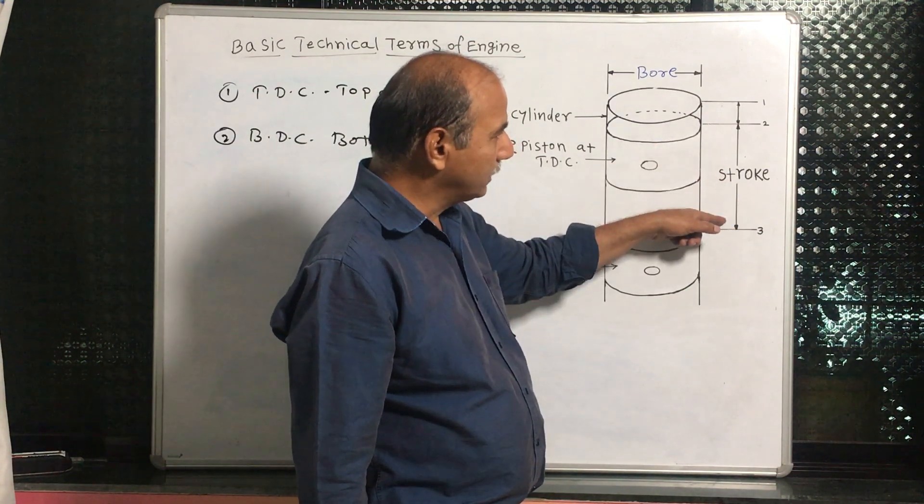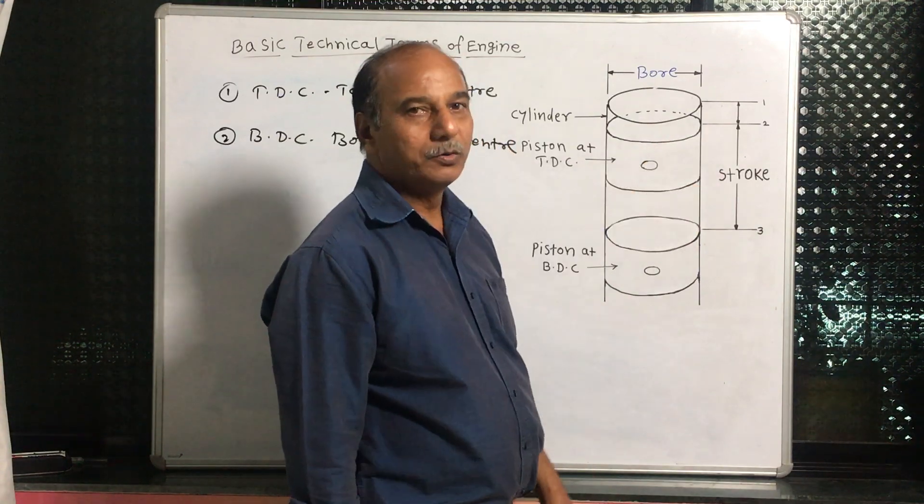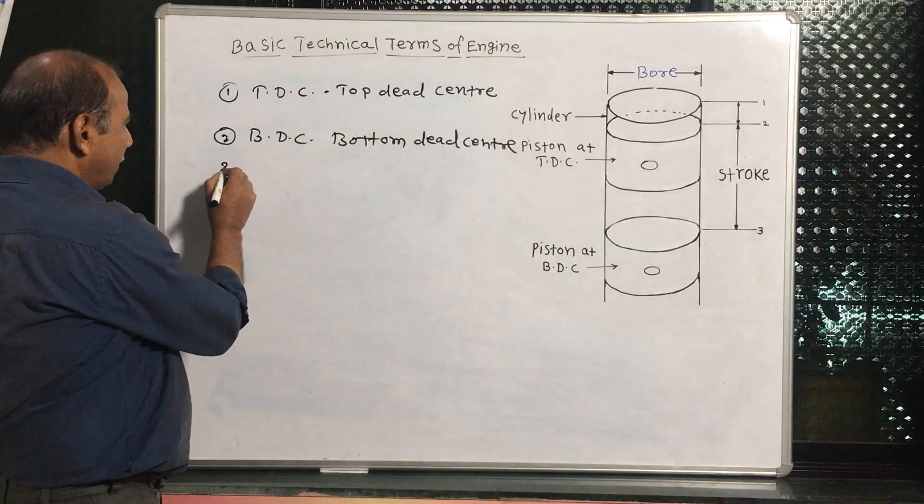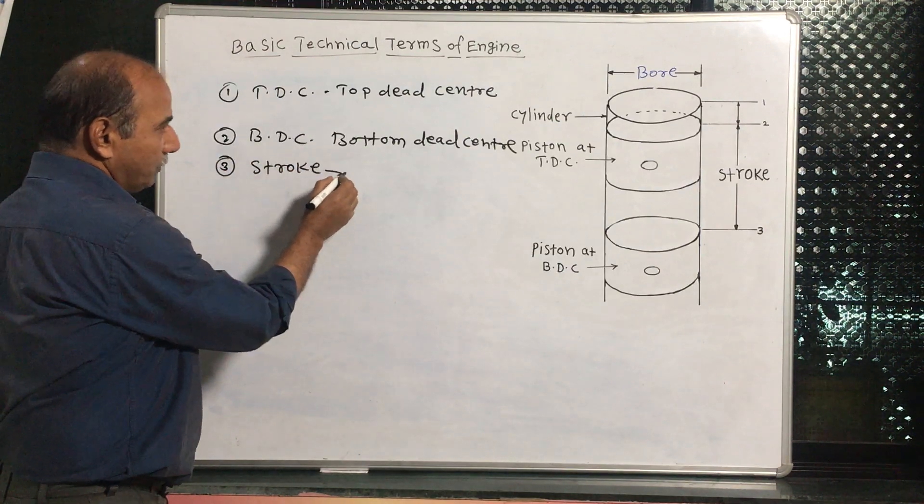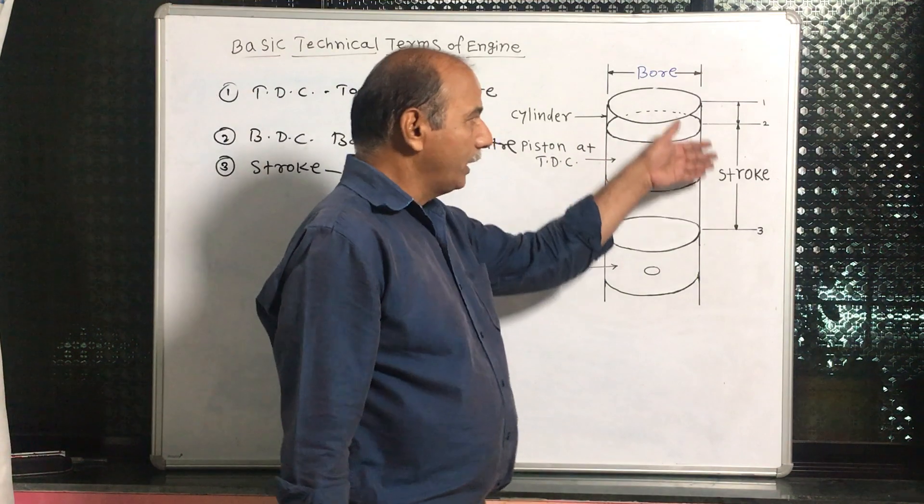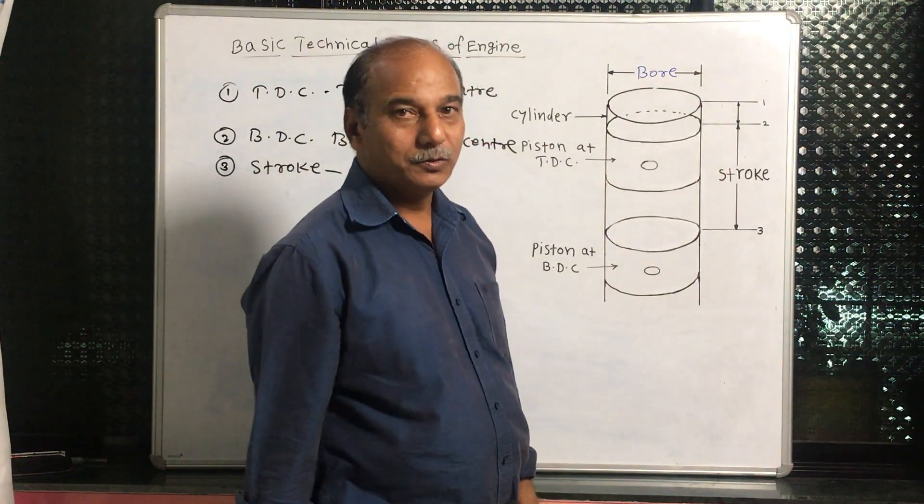And this distance, I have shown in arrow. This distance is called stroke. So that's why we can say stroke. Stroke means the distance between the TDC and the BDC is called the stroke.